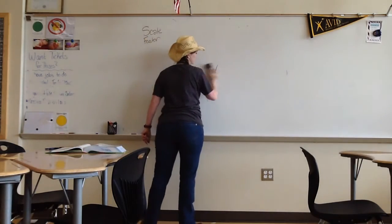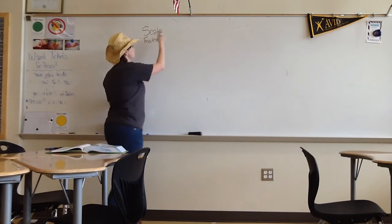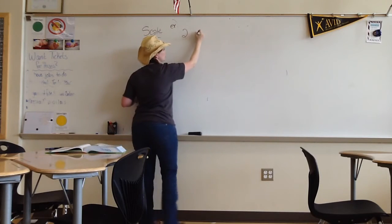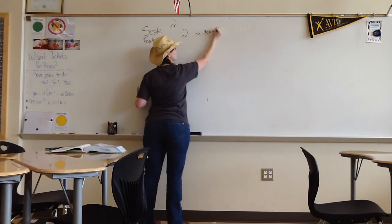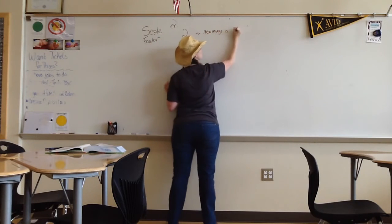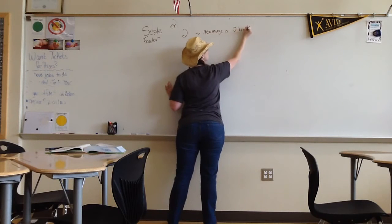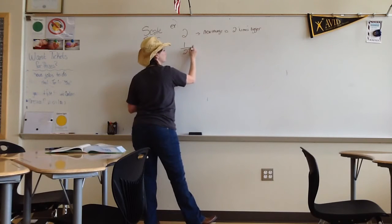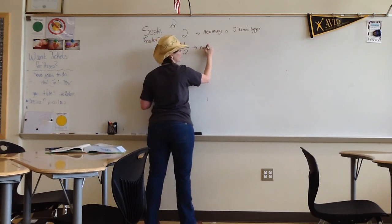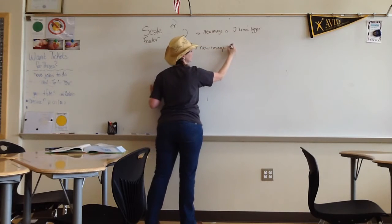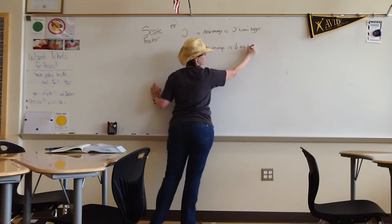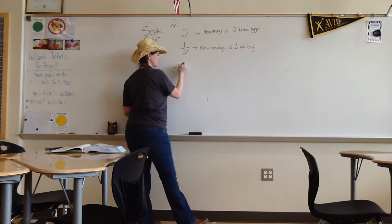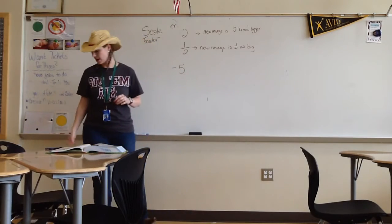You can also have a negative scale factor. So if you had a scale factor of, for example, two, then the new image is two times bigger. And say you had one-half, then the new image is half as big. But if you had a scale factor of, say, negative five, then yes, your new image is five times bigger. But there's an extra little thing in there, the negative.